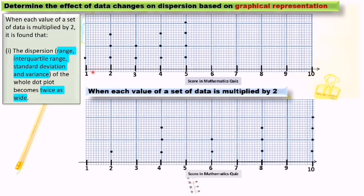So we look here: 1 times 2 equals 2, 2 times 2 equals 4, 3 times 2 moves to 6, 4 times 2 equals 8, and 5 times 2 equals 10. So you can see the whole dot plot becomes twice as wide.